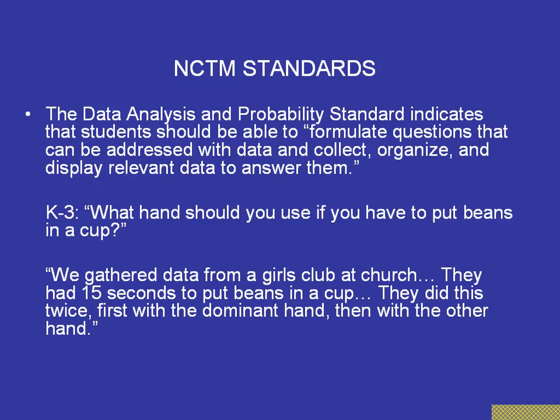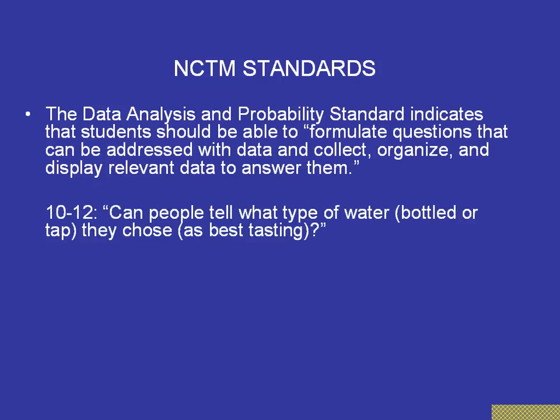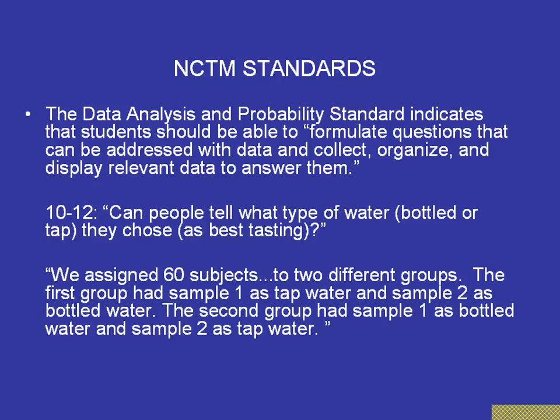As yet another example, this one from the 10 through 12 category: one poster focused on the question, can people tell what type of water — whether bottled or tap — they choose as the best tasting? Students found 60 subjects in two groups. The first group had sample one as tap water and sample two as bottled water; the second group had sample one as bottled water and sample two as tap water. The students formulated a question, collected data, and then summarized and displayed it in one or more graphs on the poster.